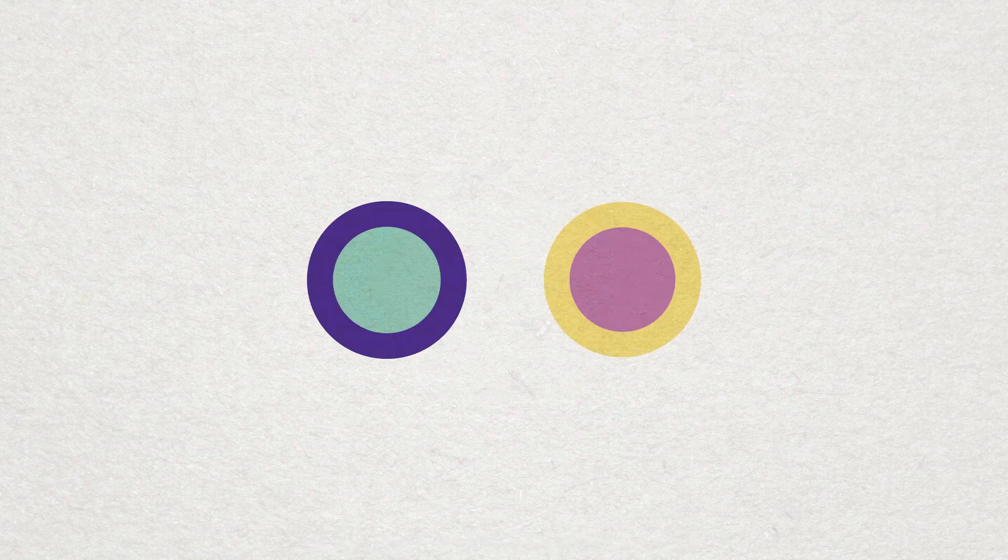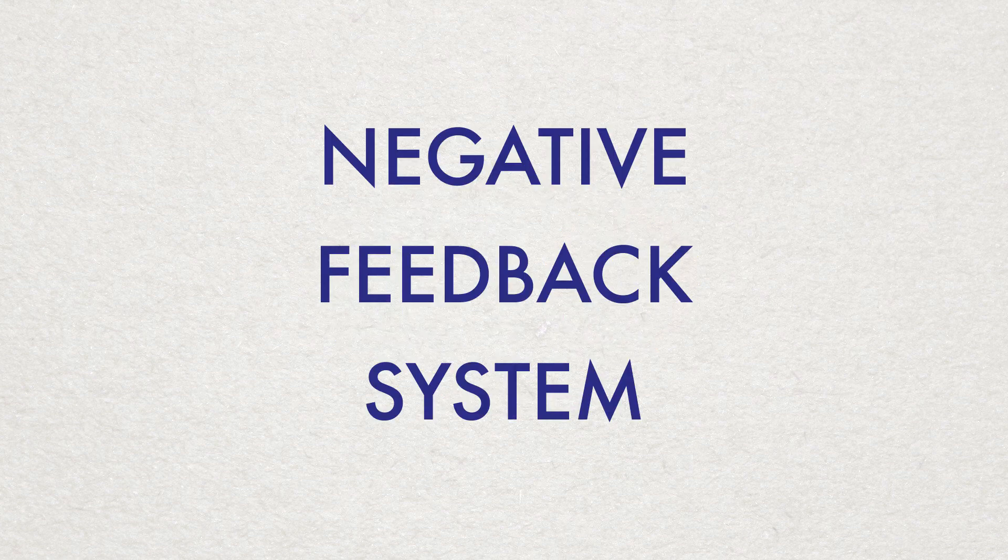Now we understand the role of insulin and glucagon, let's talk about how the body stays in homeostasis using a negative feedback system.